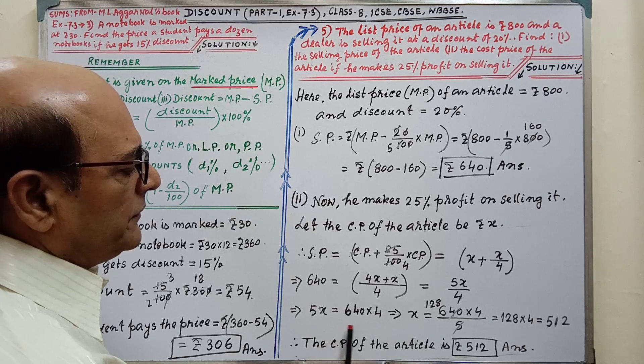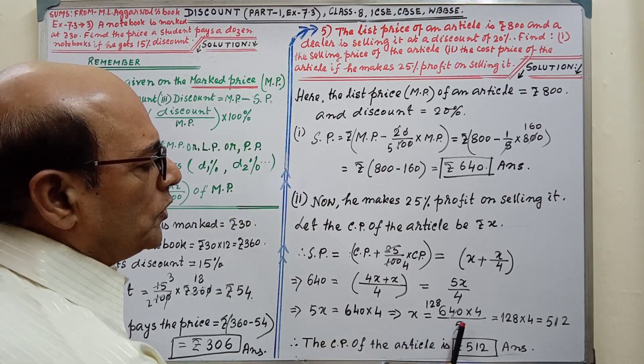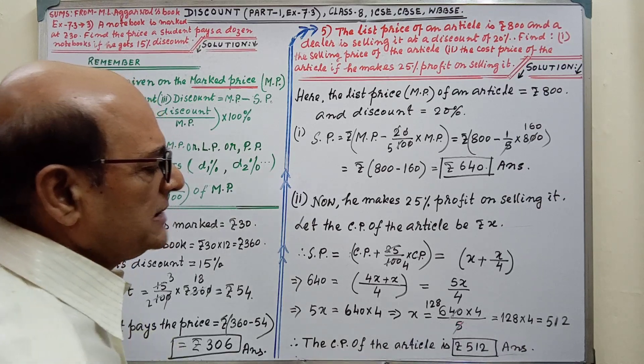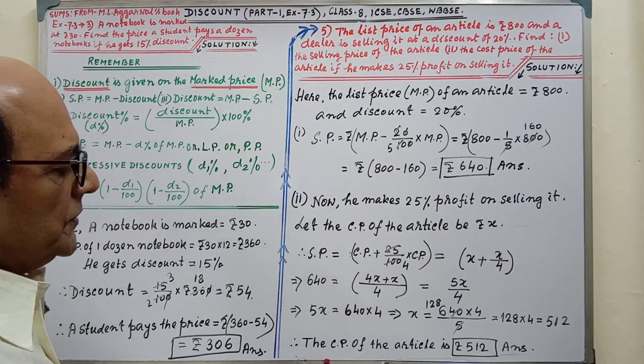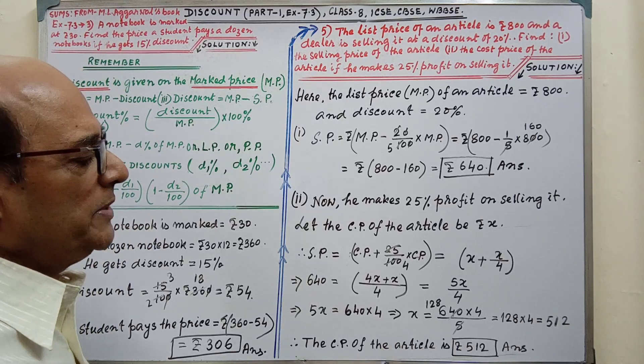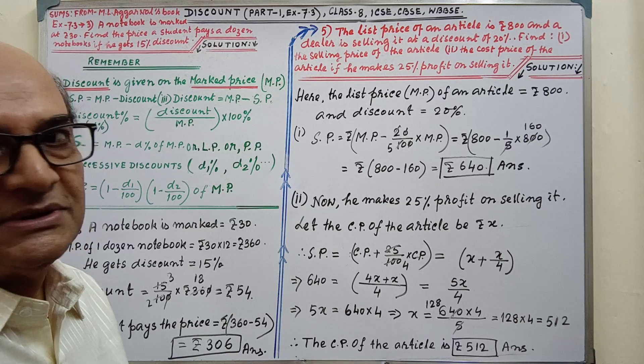By simplifying we are getting value of X = 512. Steps are given clearly. If you follow attentively then easily you will understand. Therefore the CP of the article is Rs 512. This is the answer.